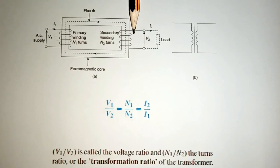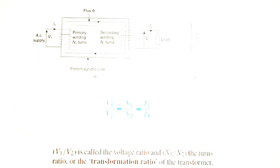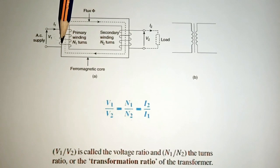So we can deduce from this that as we have a turn ratio, we can as well have a voltage ratio which is equal to the turn ratio.